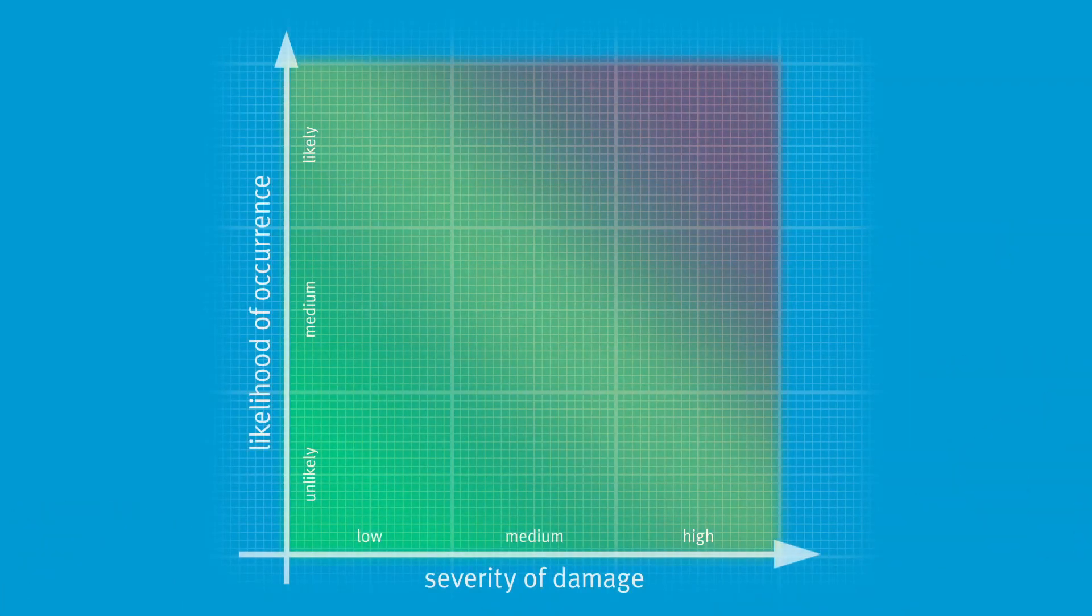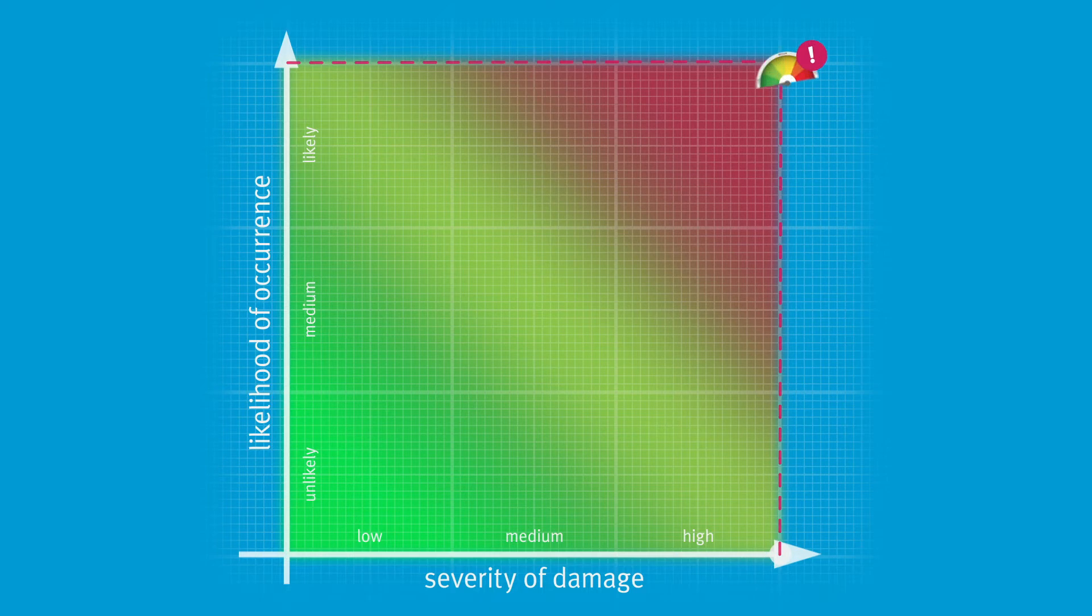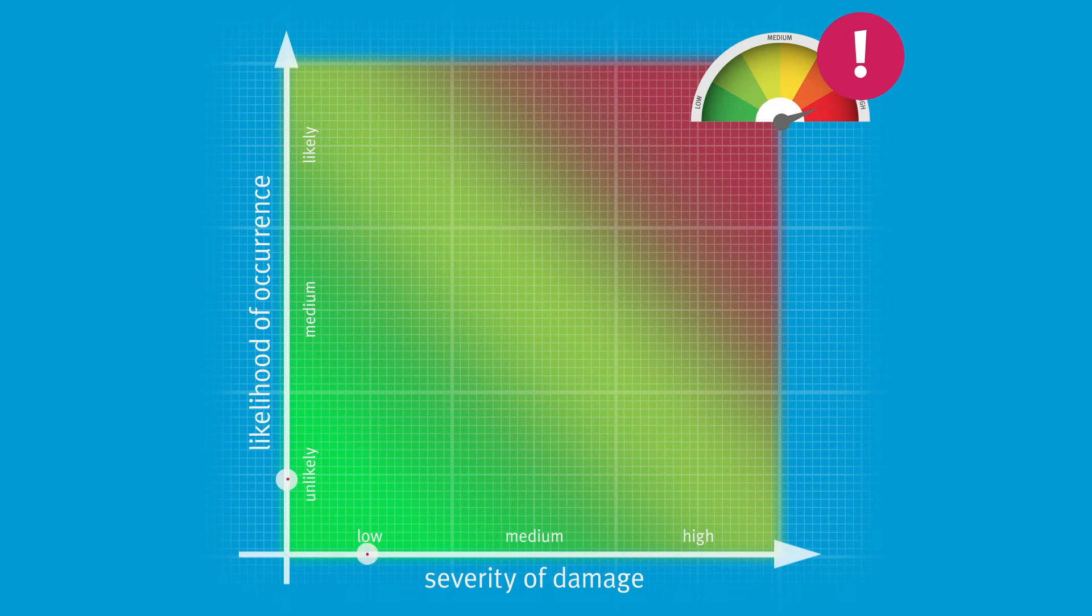For this, the Water Safety Plan team uses a risk matrix. A frequent likelihood of occurrence combined with a high severity of damage results in a high risk. A rare likelihood of occurrence in combination with a low severity of damage results in a low risk.